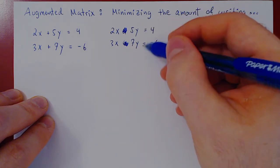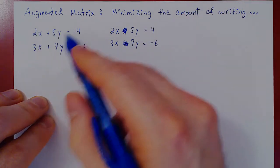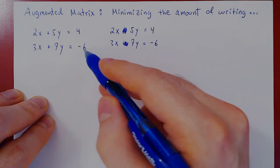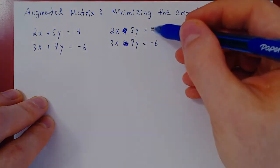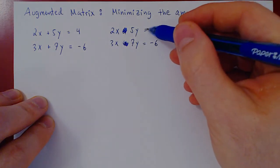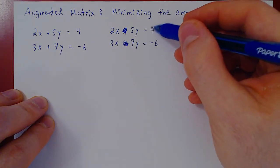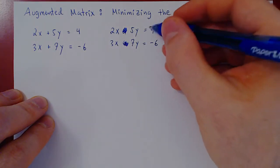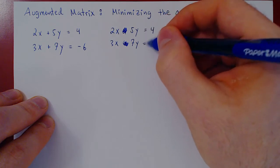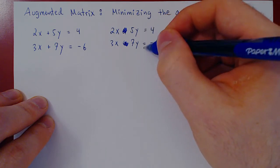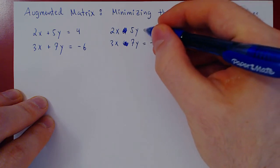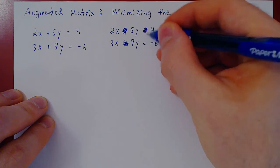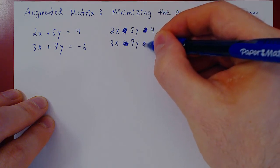We always end the linear equation with an equal sign followed by a constant. So right before the constant term there is always an equal sign. Well, if it's always an equal sign, we don't need to write it — we can just scratch it off.